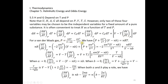For a van der Waals gas, pressure is nRT/(V - nb) minus an²/V². We're going to use this equation to derive δV/δT and plug it in. We take the first derivatives of both sides relative to volume, computing nR(δT/δV) on one side, and on the other side we take the first derivative with respect to volume.